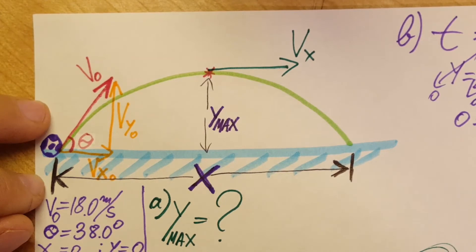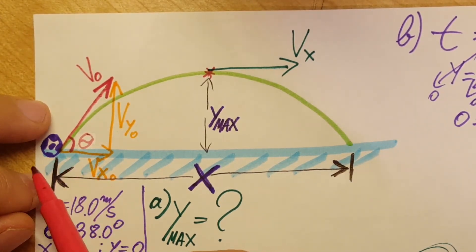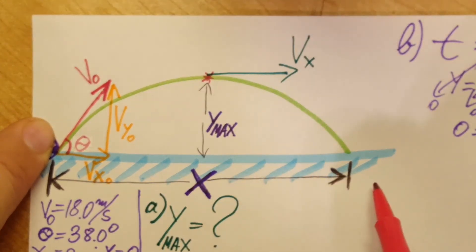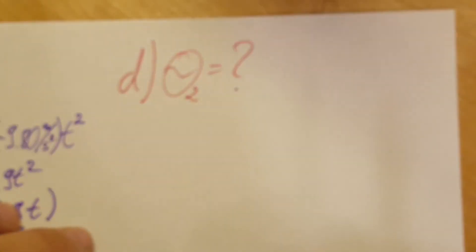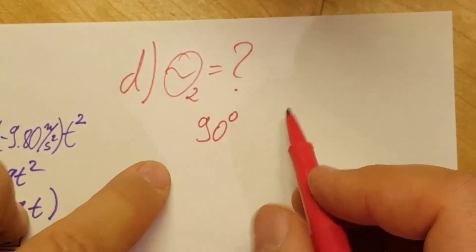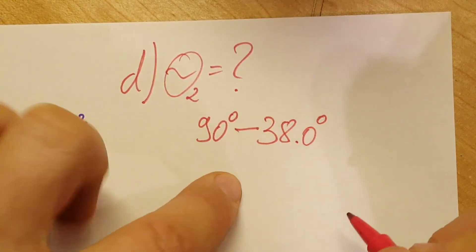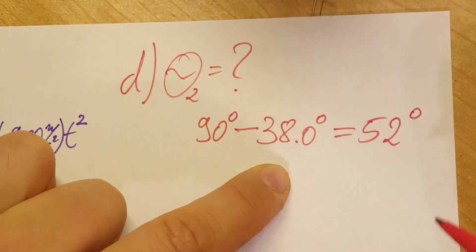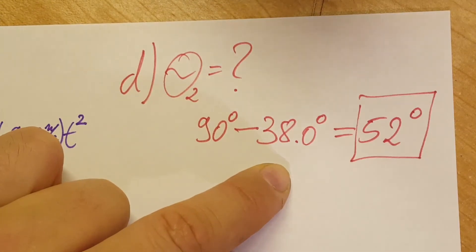In part d, they are asking us to find if there's another angle at which we can kick the ball in order to have the same distance that we got with the 38. For this one we're gonna take 90 degrees minus the 38.0, which was our original. This will give us 52 degrees and this will be our second angle at which we can kick the ball.